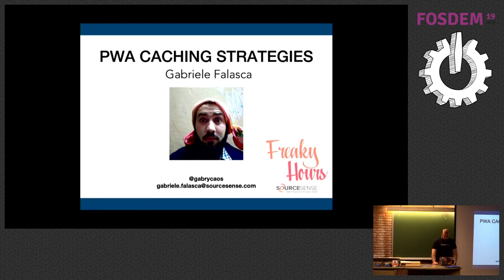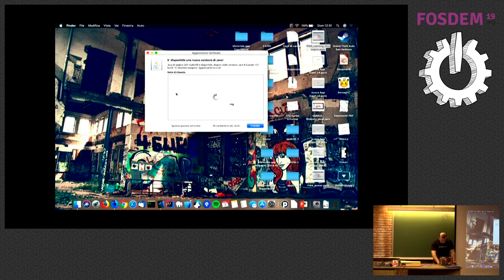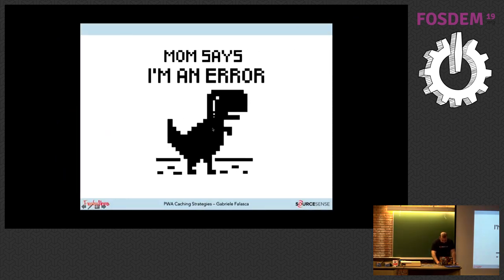I'm Gabriele Falasca and I want to talk with you about the caching strategies for Progressive Web Apps. You know the Chrome Dino when you are offline? Offline is a problem for the information flow of an application because you don't have the data. Now I will show you how to manage the data also for offline.